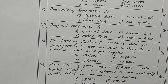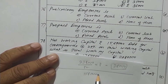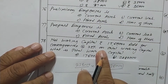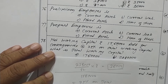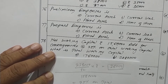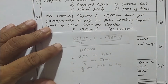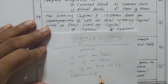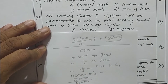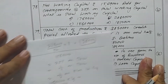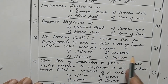Question 78. Net working capital is rupees 15,60,000. Add for contingencies 25% on total working capital, which means one-fourth on total, or one-third on net working capital. So 15,60,000 into one-third gives 5,20,000, making total working capital rupees 20,80,000. Option B is the correct one.